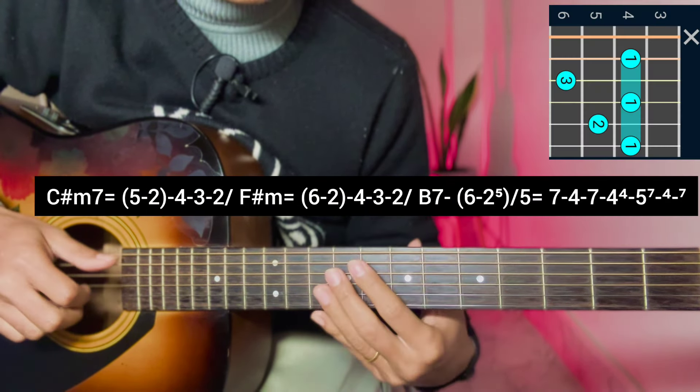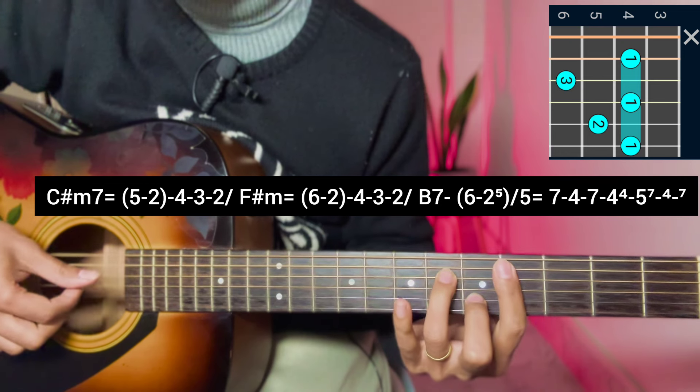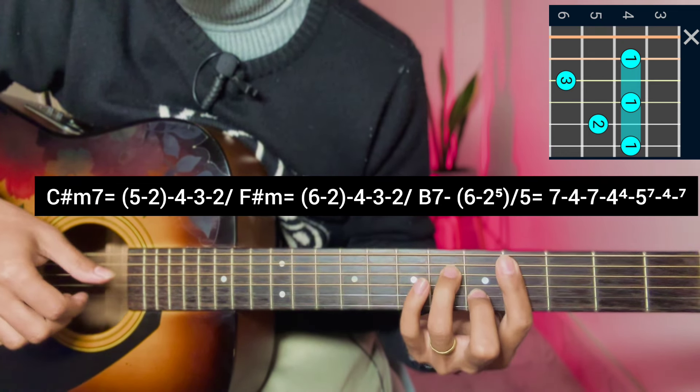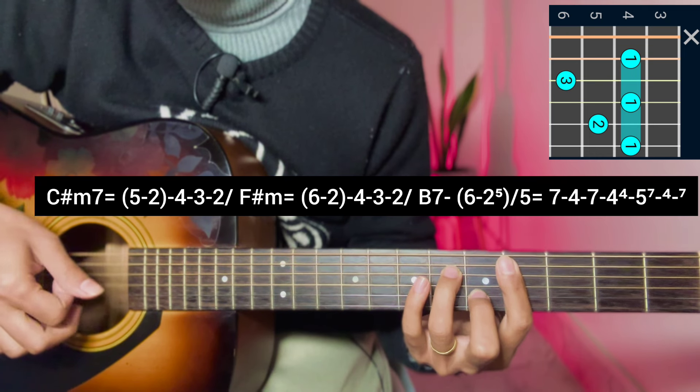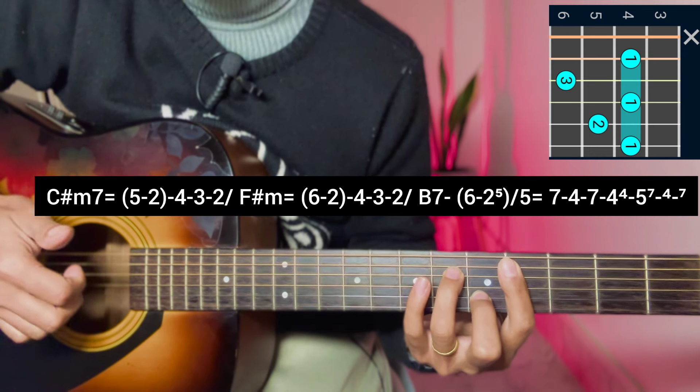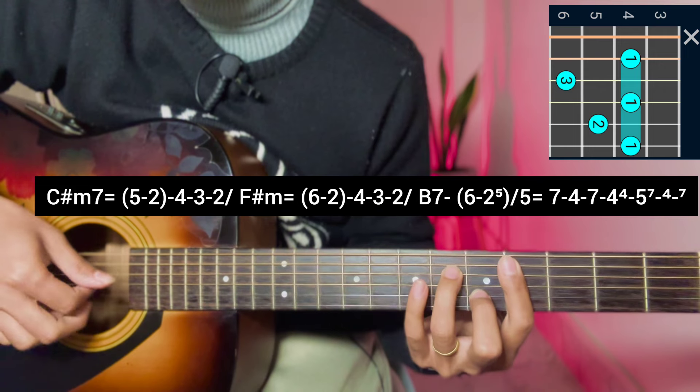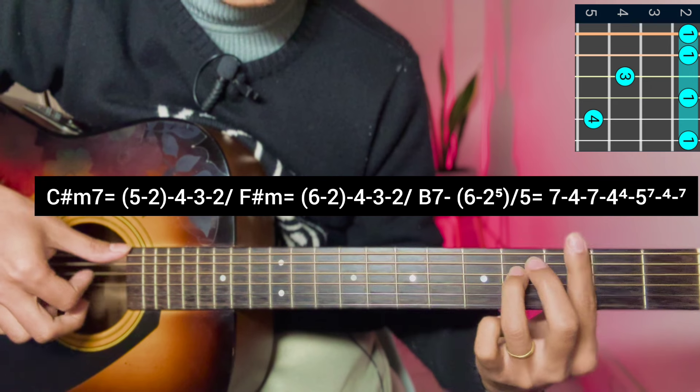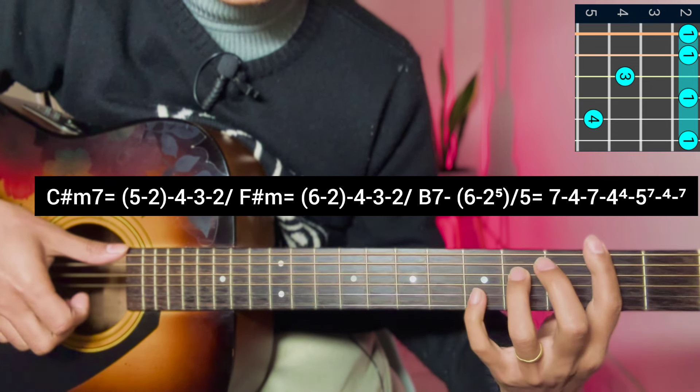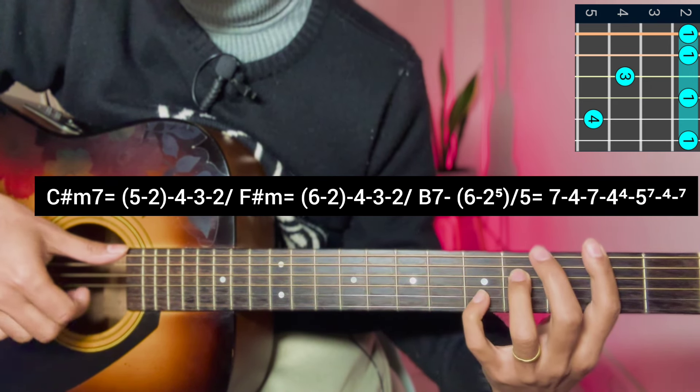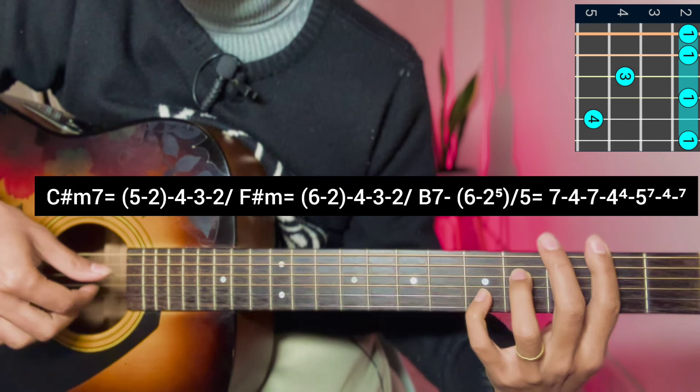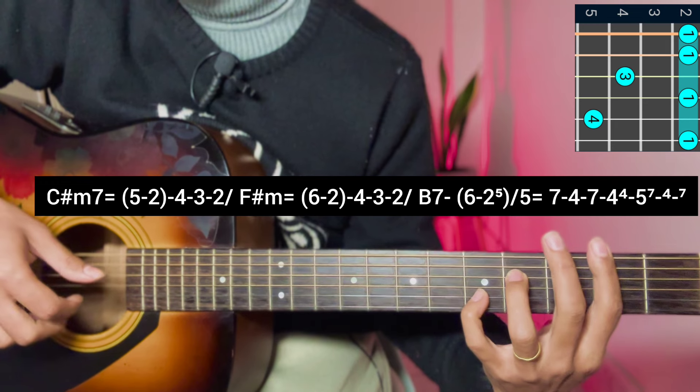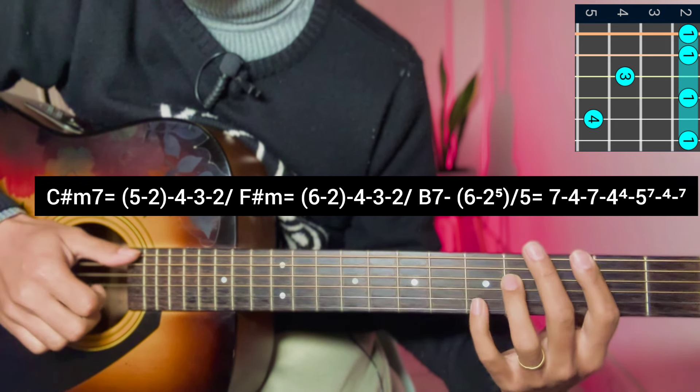I am going to play the fifth string of the fourth fret, C sharp minor 7 chord. Now I will play the second string of the fifth fret. Then grab the third string of the fifth fret and the fifth fret F sharp minor. I will play the fifth fret in the pattern of the fifth string of the fourth fret.